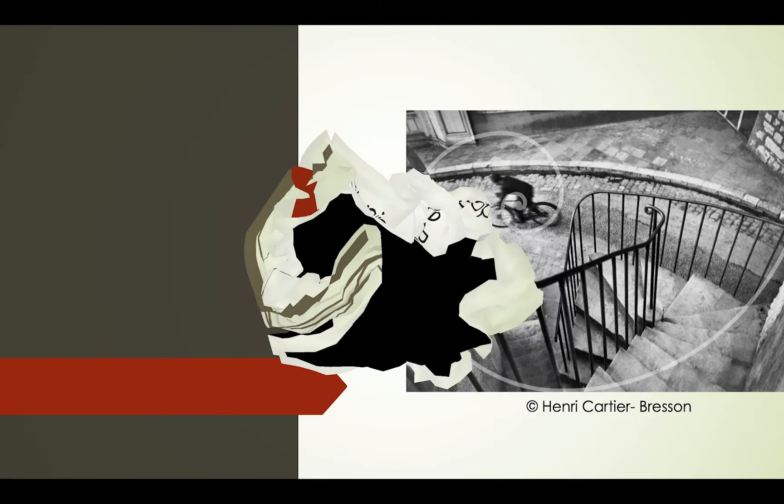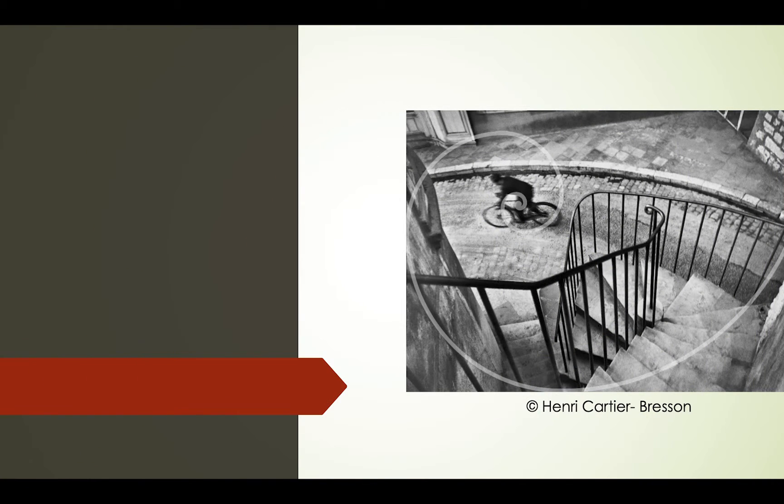Okay, let's look at a few examples of the golden ratio. Here we have a picture by Henri Cartier-Bresson. Notice how the spiral automatically goes to the main subject of the image.